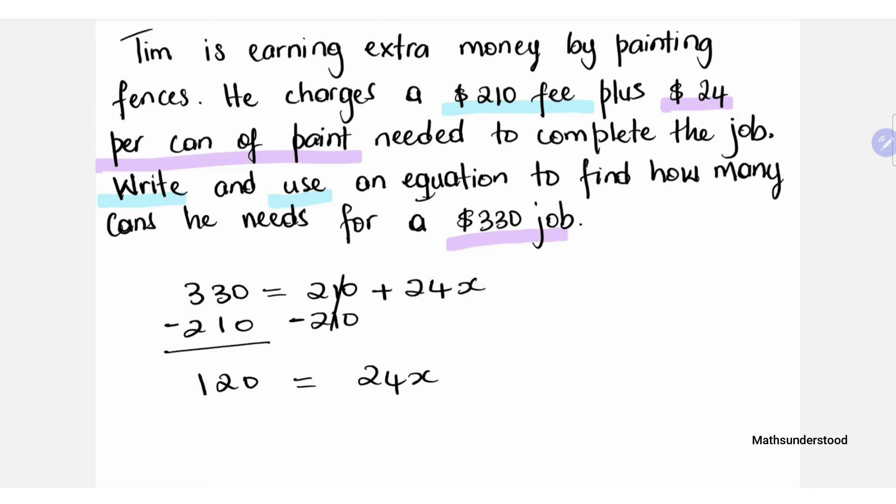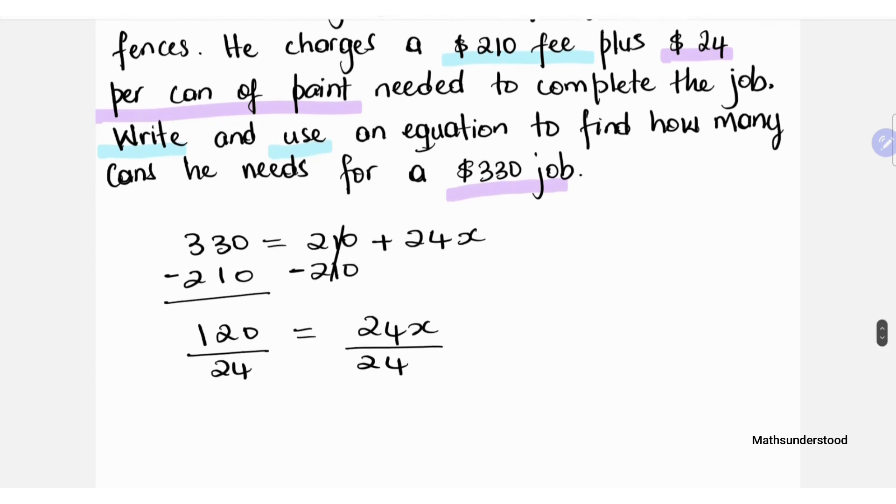Next, continuing to solve for X, we will divide both sides of the equation by 24. By doing so, we're left with X being equal to 5.